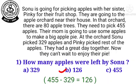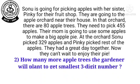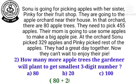Very good children. Now, next number 2: How many more apple trees will the gardener plant to get the smallest 3-digit number? The smallest 3-digit number is 100. So, in 80, if we add 20, we will get 100. You can see in the picture also.